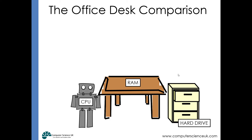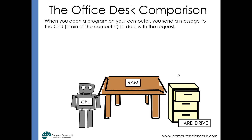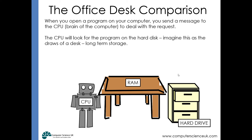You can think of how the CPU, the RAM, and the hard drive work together like an office worker at a desk. When you open a program, a message is sent to the CPU — the brain of the computer — to deal with the request. The CPU looks for the program on the hard disk. Think of the hard drive as a filing cabinet — long-term storage. The CPU, like an office worker, goes to the filing cabinet, looks through the drawers, and finds the piece of work it needs.